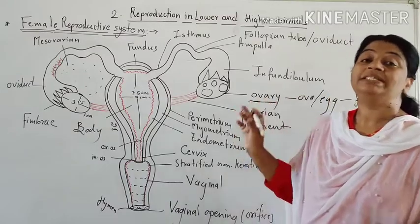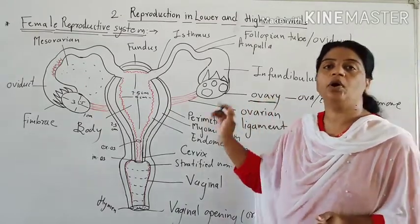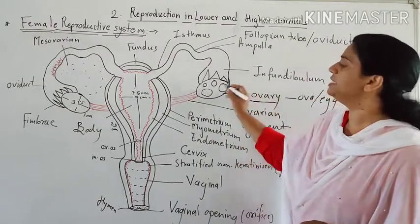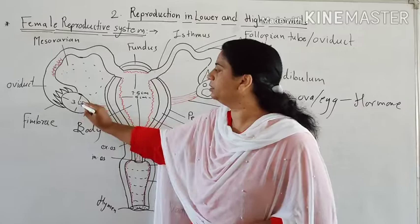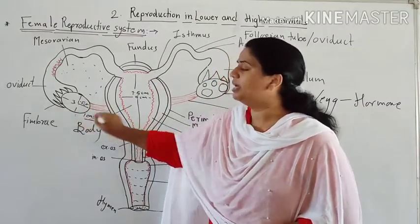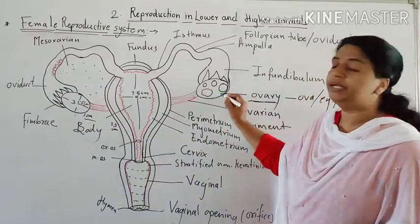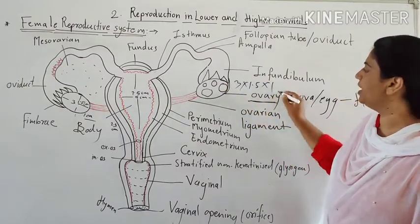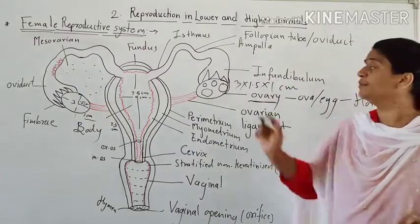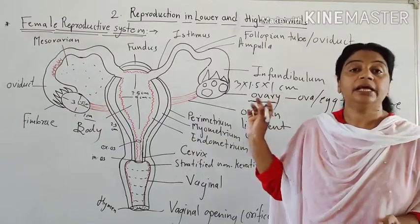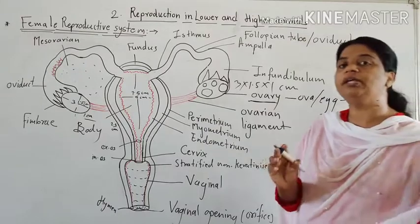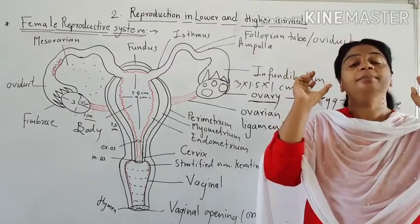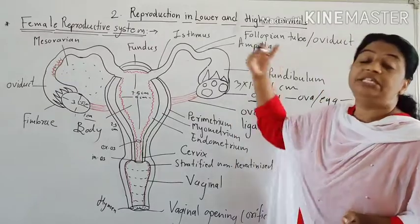What is the structure of the ovary? It is a small oval-shaped or almond-shaped structure. Its size is 3 cm in length, 1.5 cm in width, and 1 cm in thickness. So the size of the ovary is 3 × 1.5 cm. It is almond-shaped and it is smaller than the testes. The ovaries are situated in the abdominal cavity, in the pelvic cavity, just below the kidneys.